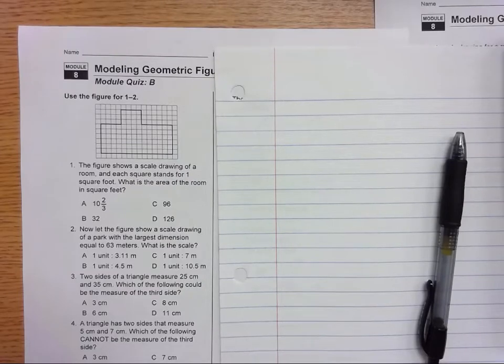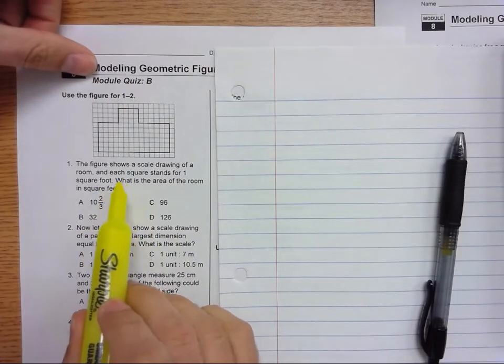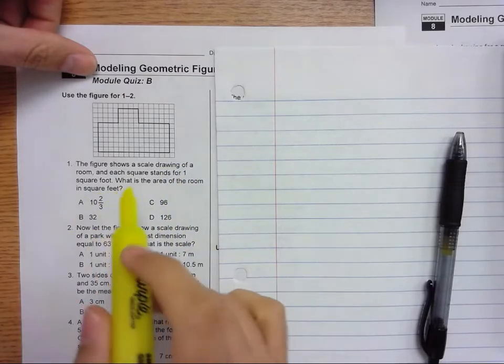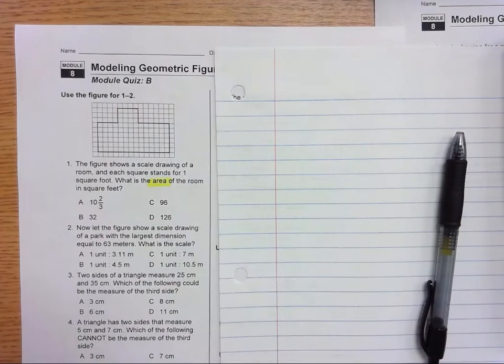Let's look at the module 8 study guide problems 1 and 2. A figure shows a scale drawing of a room. Each square stands for one square foot. What is the area of the room in square feet?